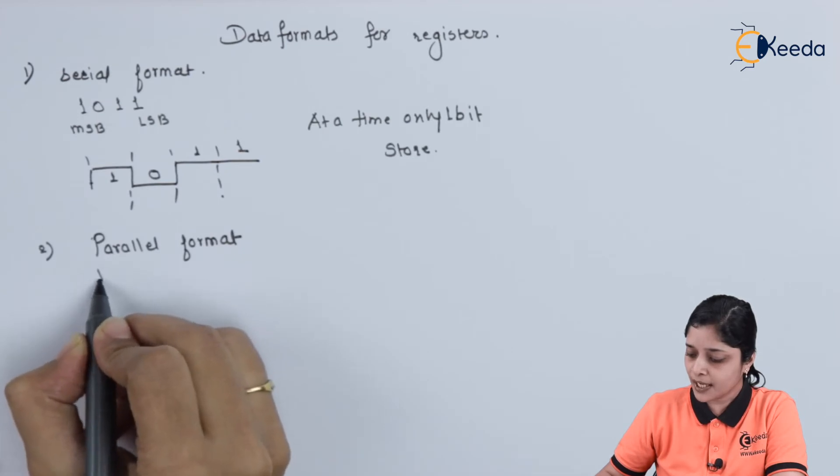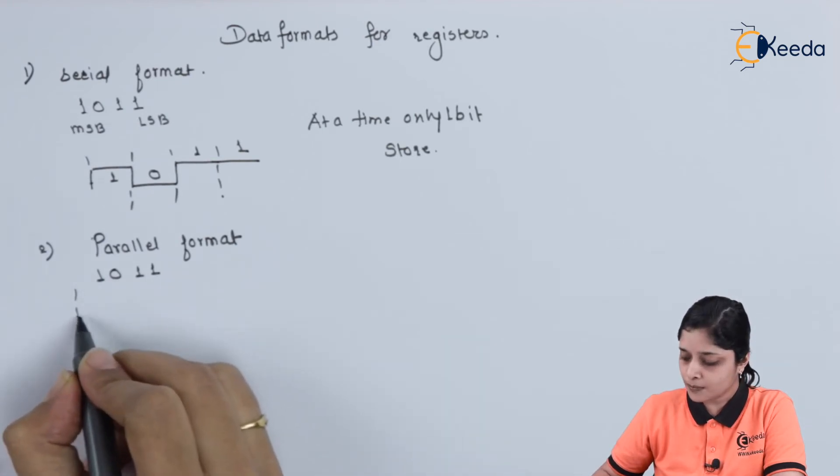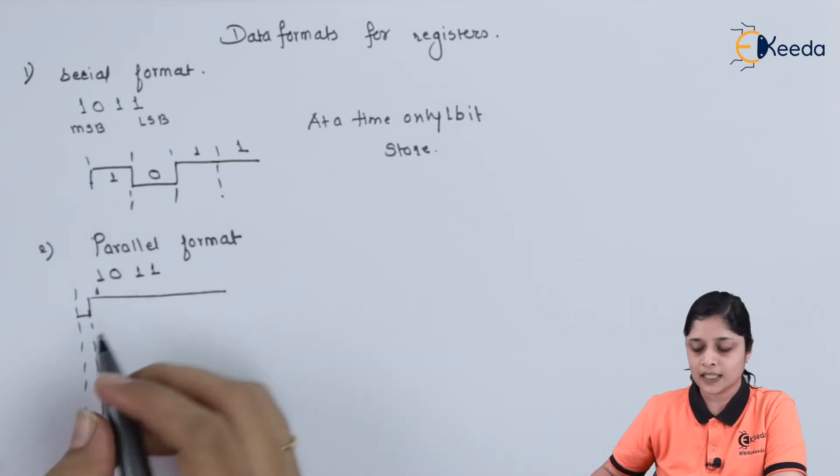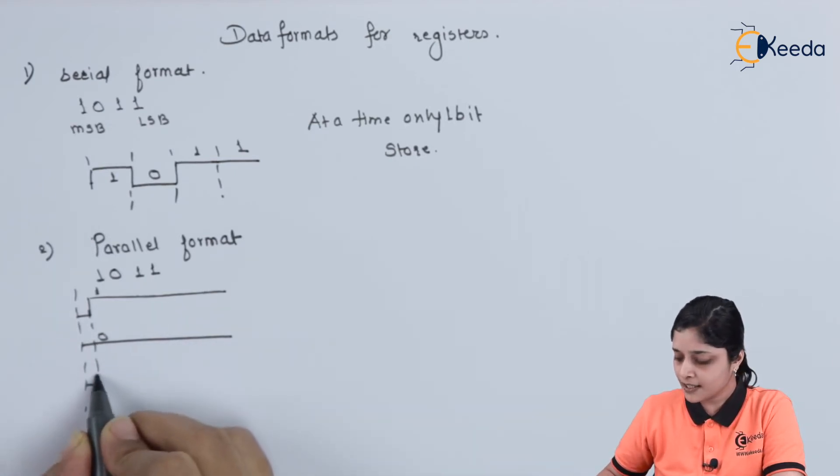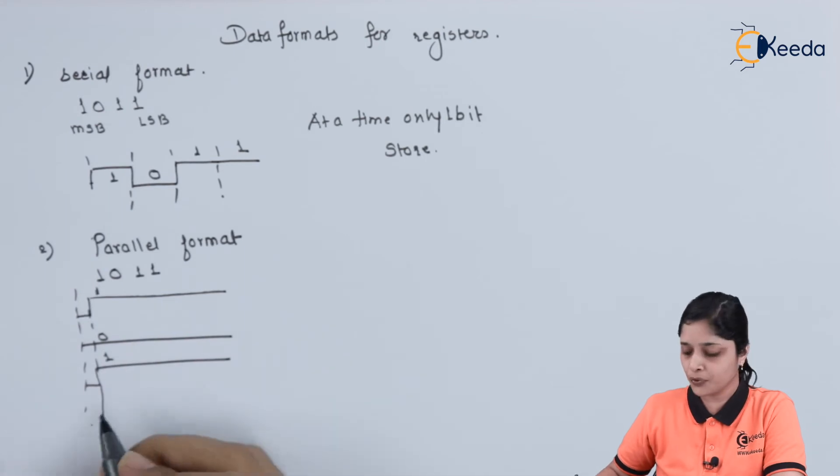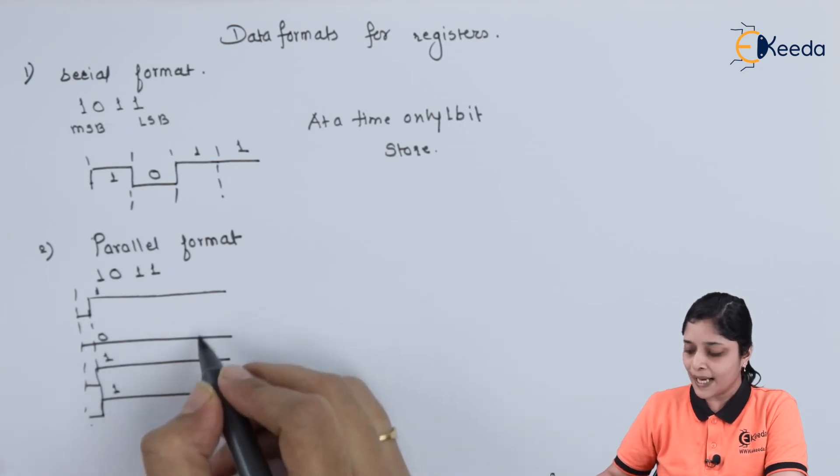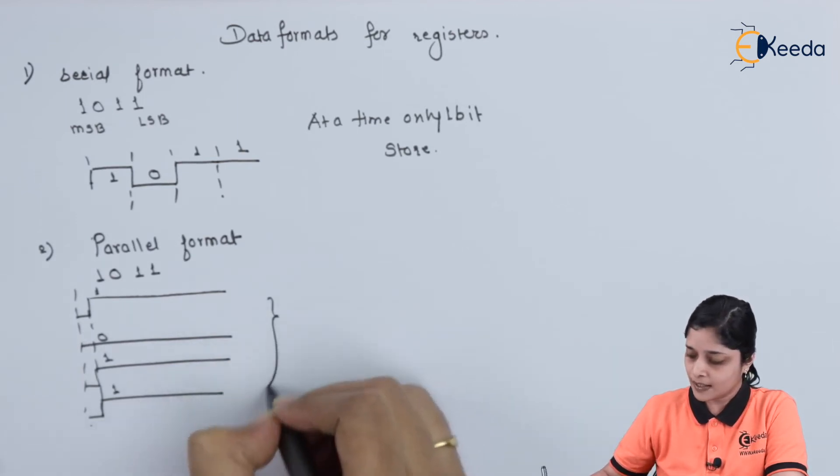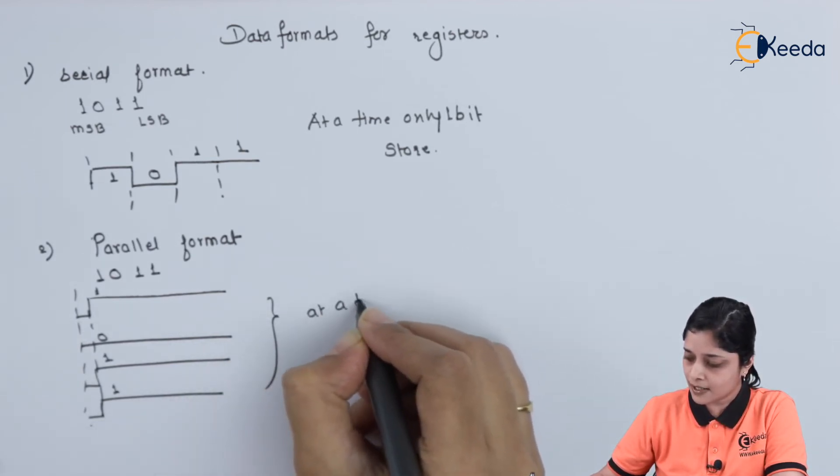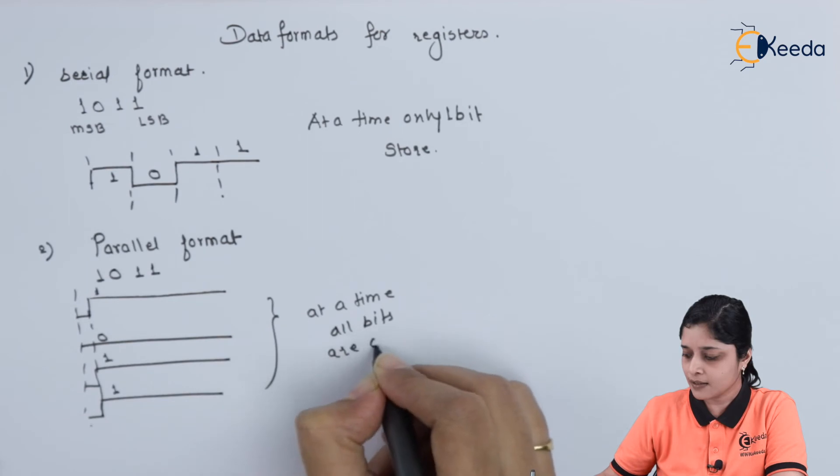Suppose again we have 1011. First of all, your logic 1 signal will be there. Then logic 0 signal you have to apply. After that, again logic 1 signal you have to give, and finally again logic 1 signal you have to give. So parallely your bits are connected to the flip-flops. At a time, all bits are given.